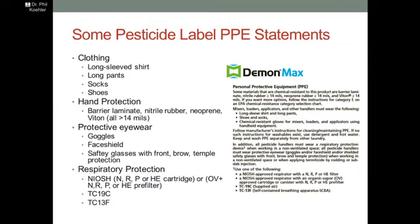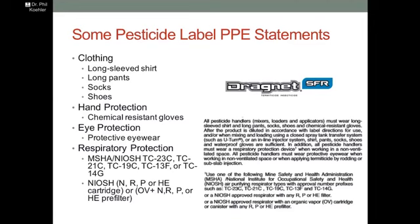Taking a look at another label — clothing is identical for Dragnet. Hand protection: chemical resistant gloves, very similar to the Termidor wording. Eye protection: any protective eyewear. Then respiratory protection: TC23C, TC21C, TC19C — all MSHA and NIOSH requirements. And NIOSH NRP or HE cartridge or OV NRP or HE prefilter.